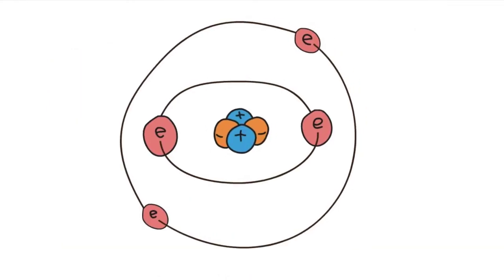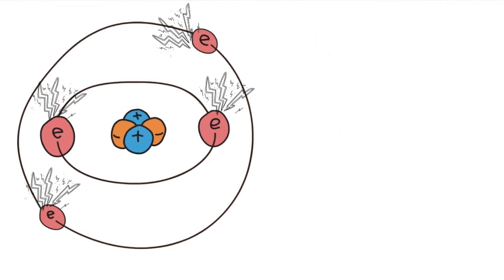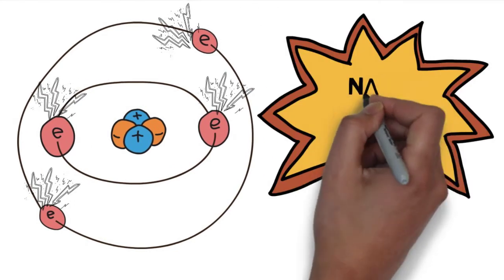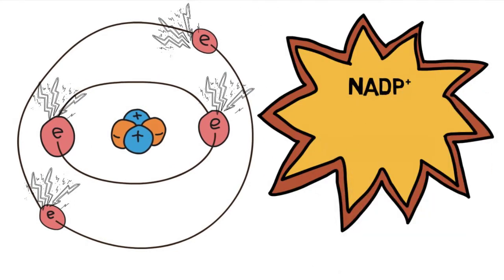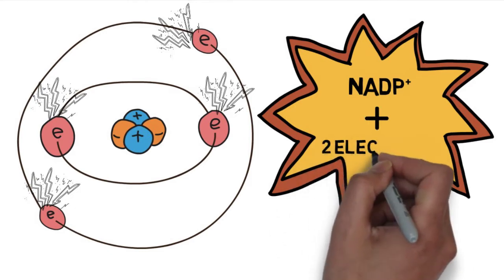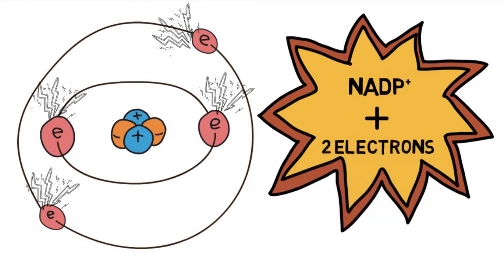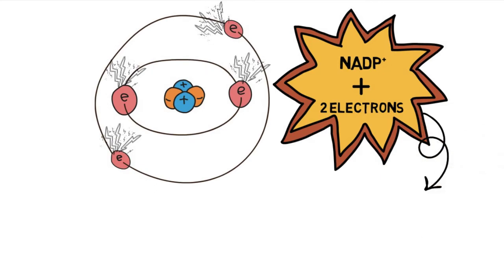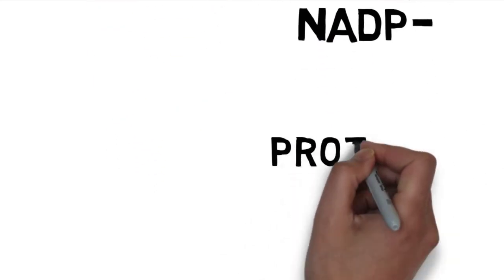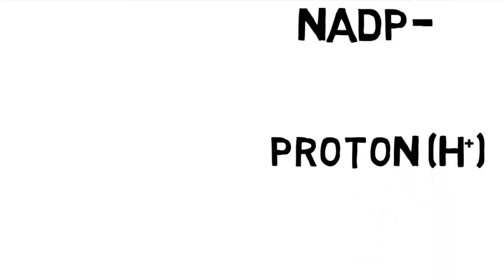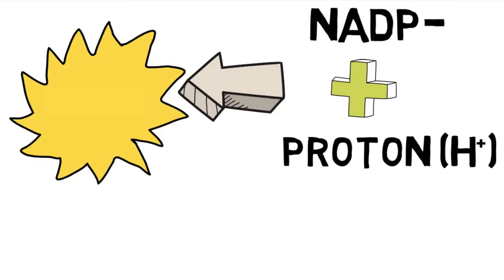It's really important that you can give an account of how those high energy or energized electrons and those protons are trapped and transferred. So NADP+ will trap two of those high energy electrons and in so doing becomes NADP-. NADP- then will attract a proton or a hydrogen ion and in so doing becomes NADPH.